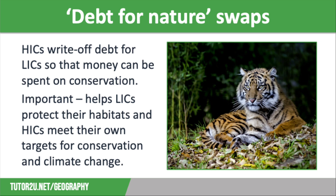For example, the USA agreed to allow Brazil to convert the 17.5 million dollars it owed in debt repayments into a fund to protect large areas of the Amazon rainforest, and agreed to write off Indonesia's 30 million dollar debt to enable the money to be spent on protecting the Sumatran forests, which are home to endangered tigers and rhinos. Western governments also agreed to reduce what Costa Rica owed them in debt repayments, as long as they spent 25 million dollars on conservation projects.